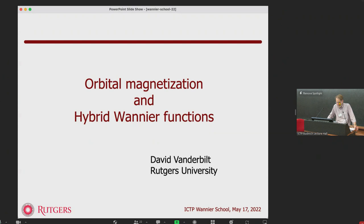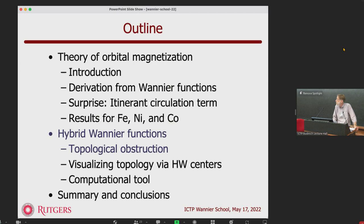Good morning, it's wonderful to be here. I'm a long-time visitor of ICTP — it's not quite an uncountable number of times that I've been here, but it's wonderful to be back for the first time after COVID. So what I've decided to do, to be a little bit orthogonal to what was done yesterday, is to focus on a couple of topics about use of Wannier functions. One is for a derivation of the theory of orbital magnetization, and the second is about hybrid Wannier functions, and in that context I'll talk a little bit about topology and topological obstruction.